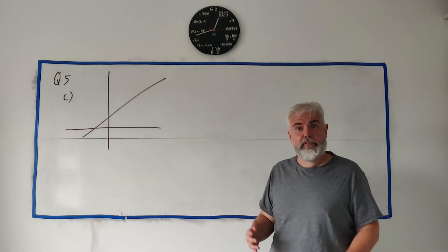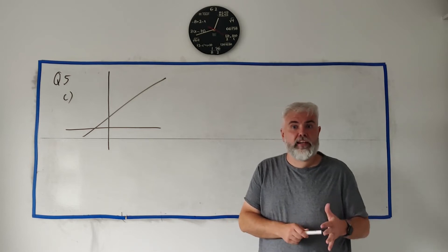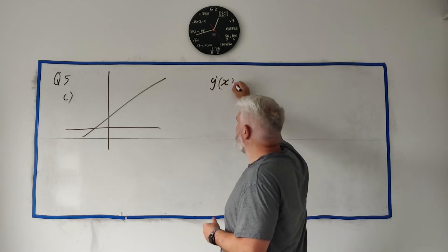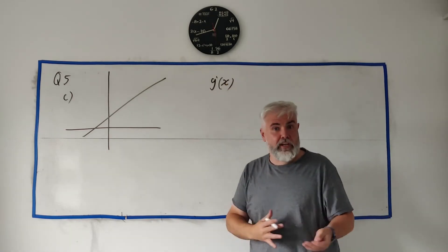And then they ask us to use the graph to find the rate of change of g(x), and then they clarify, they say that's just like finding g dash x which is the derivative. The rate of change, the derivative, they're the same.